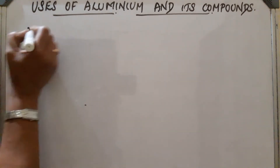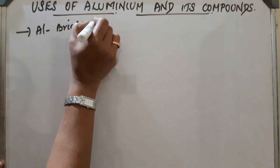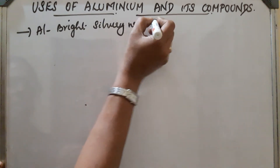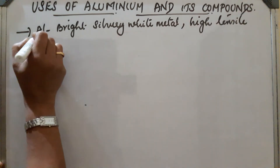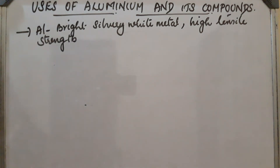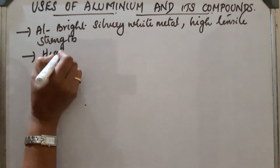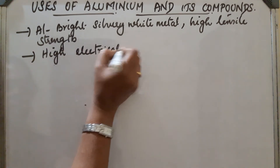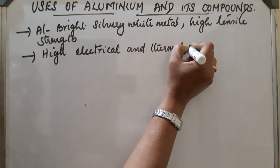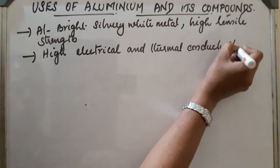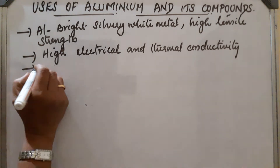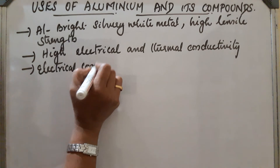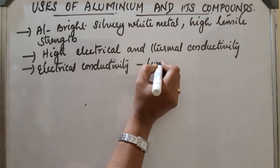Aluminum is a bright silvery-white metal with high tensile strength. It also has high electrical and thermal conductivity. In fact, its electrical conductivity is twice that of copper.